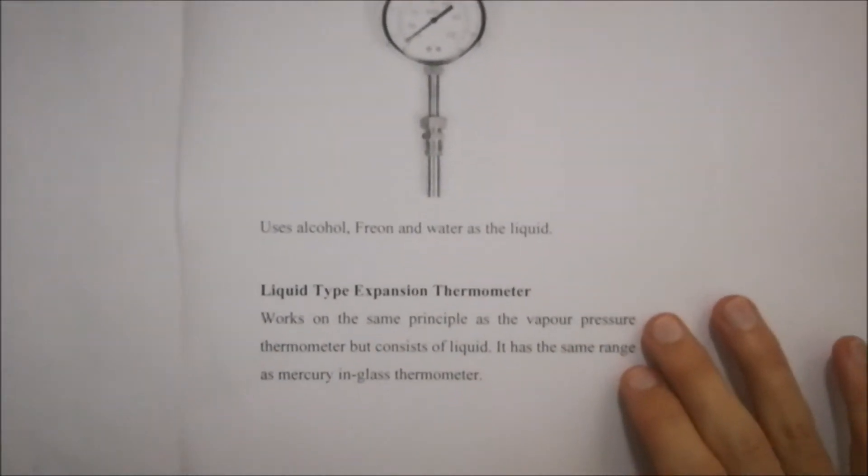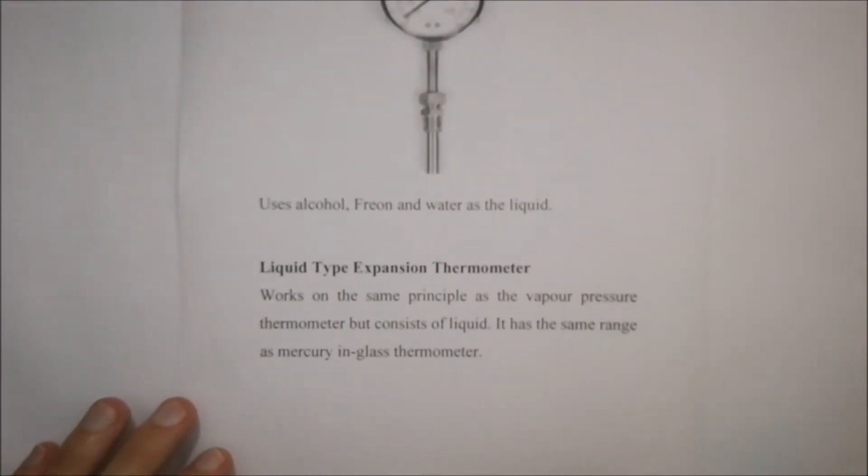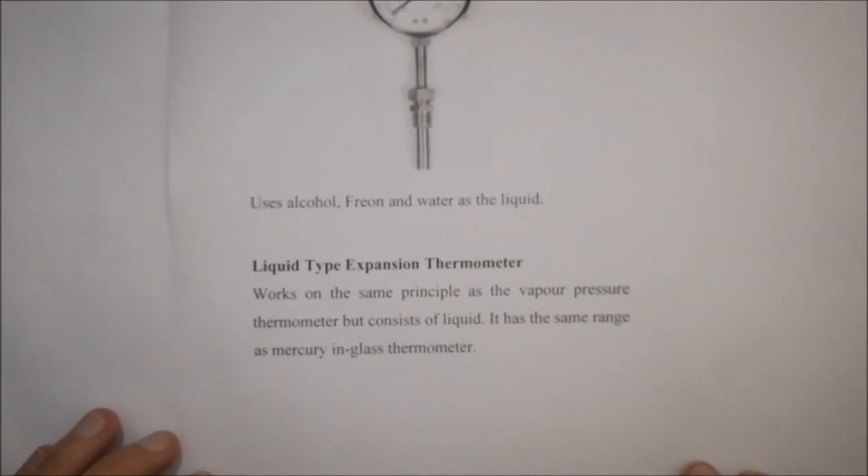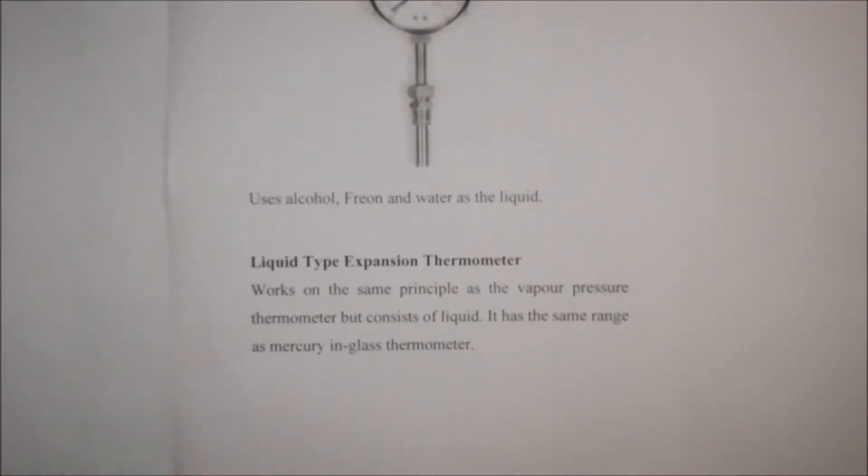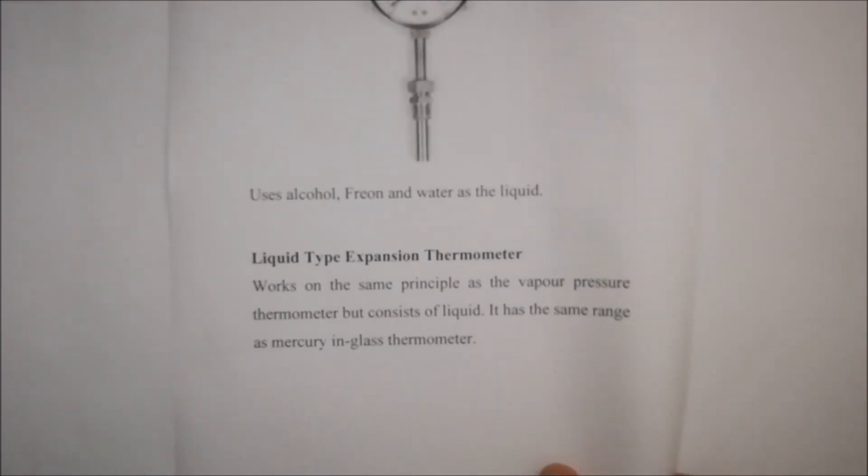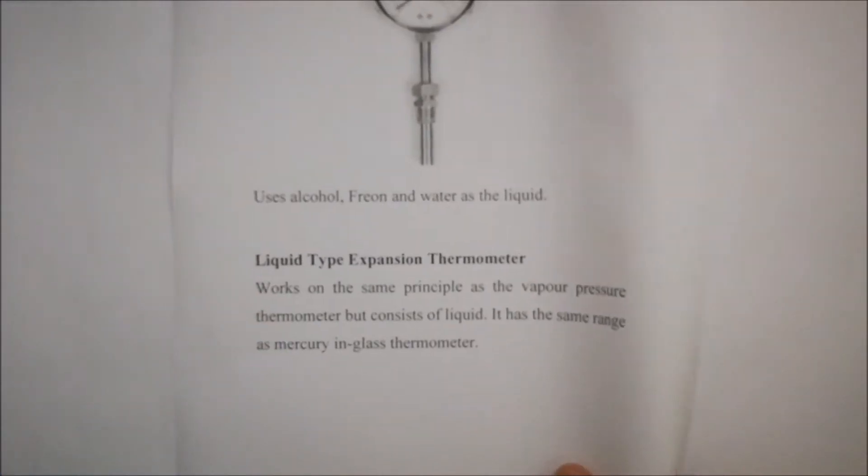Then you also get a liquid type expansion thermometer. It works on the same principle as your vapor pressure thermometer but consists of liquid. It's the same range as mercury in glass thermometer. Just be aware of those characteristics for your liquid type expansion thermometer.